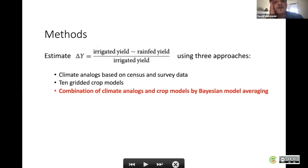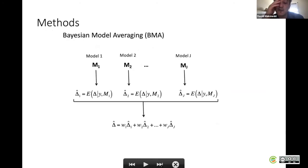The third approach is a combination of the two previous estimates of yield gaps. We use a Bayesian model averaging technique. The principle is as follows: you have different models, here we have 10 process-based models. Each model provides one prediction.